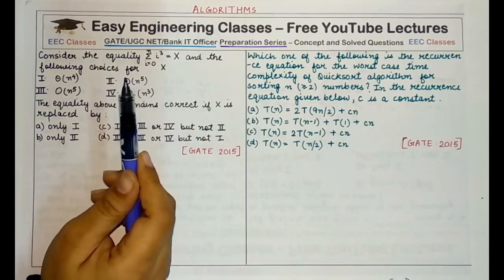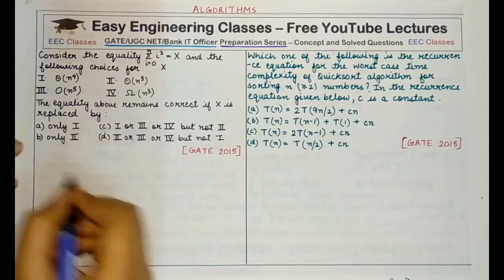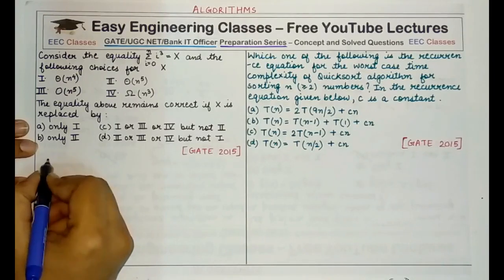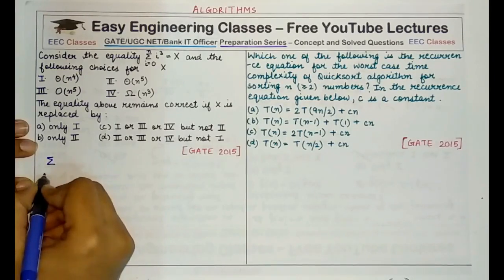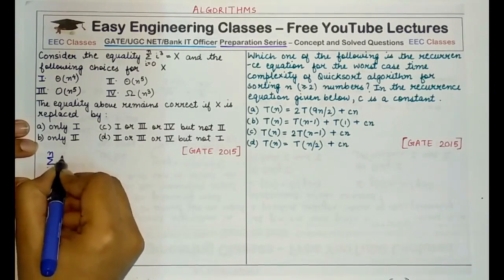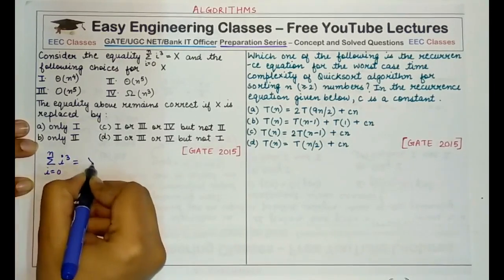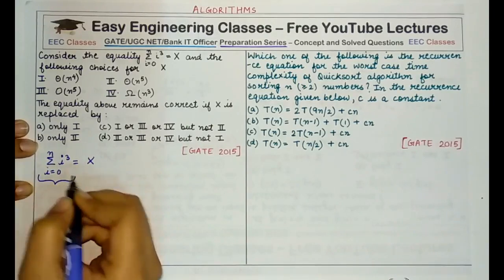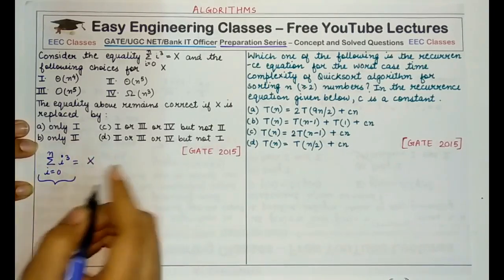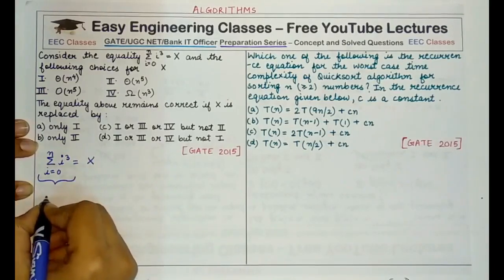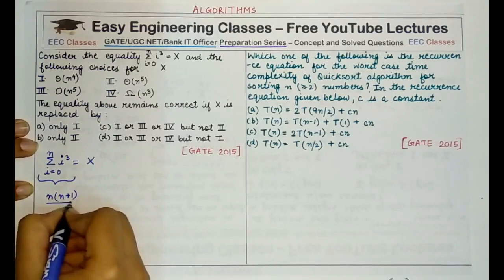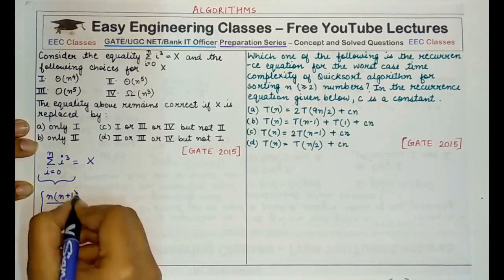First, you need to know what exactly the summation of the cubes of the first n natural numbers is. You must remember that the sum of the cubes of the first n natural numbers is equal to n(n+1)/2, whole squared.